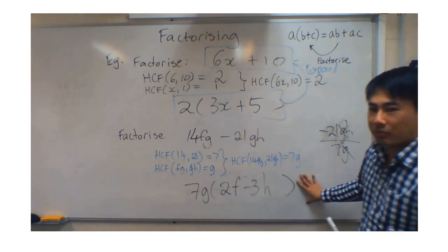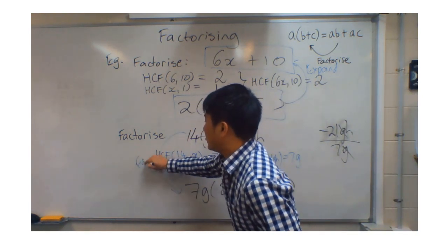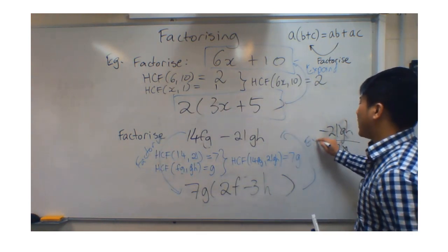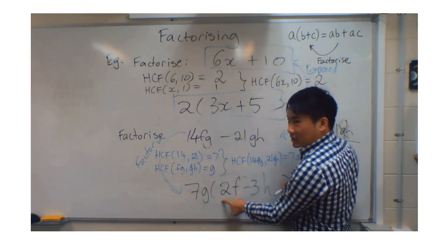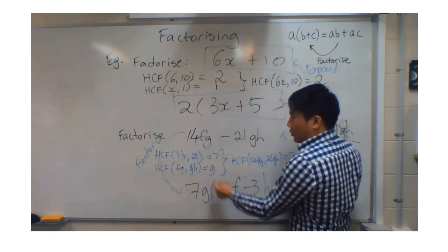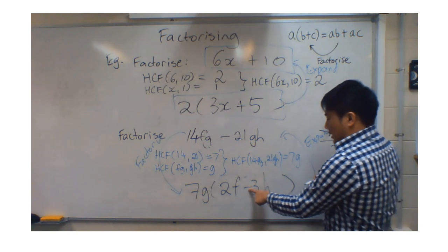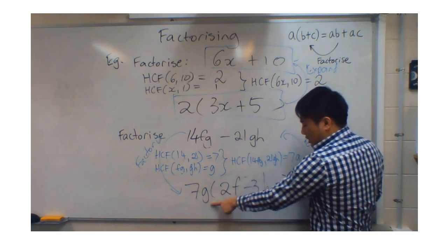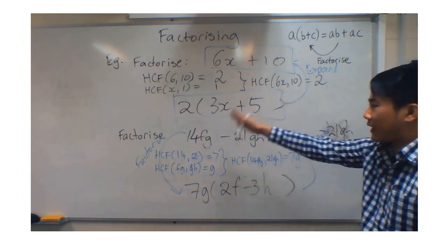How do we know we've done it properly? We expand to check. 7G times 2F: 7 times 2 is 14, G times F is GF or FG, giving 14FG — correct. Second term is negative 3H, so don't forget the negative sign: 7 times negative 3 is negative 21, G times H is GH, giving negative 21GH. So we have factorized correctly.